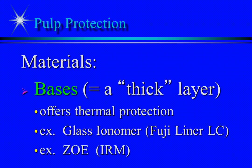Bases are often the same material as liners and are commonly used in very deep preparations. One example is Fuji Liner LC; bases of Fuji Liner LC are applied in three or four coats and applied only on the dentin. IRM is used as a temporary restorative material and is not typically used as a base.